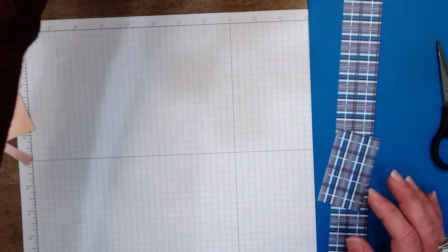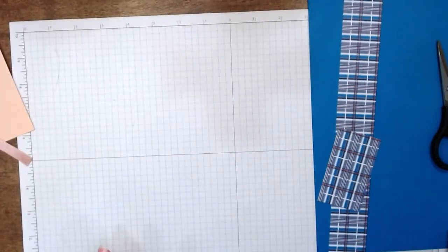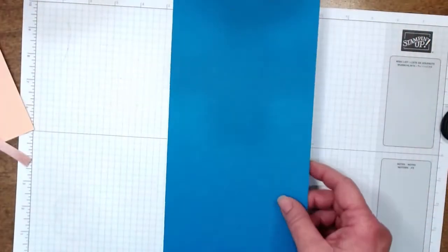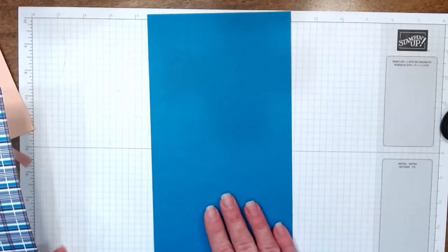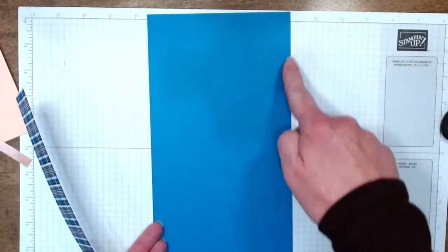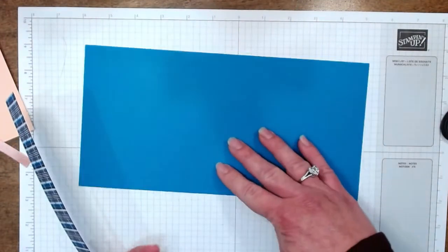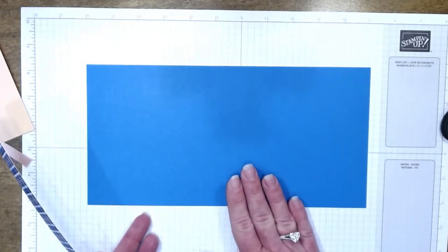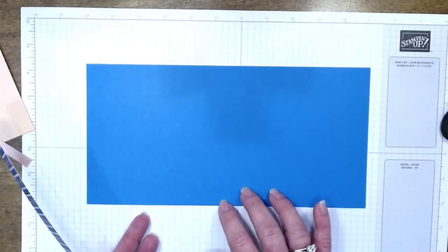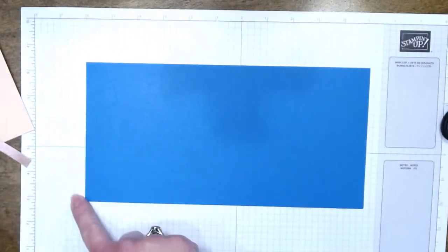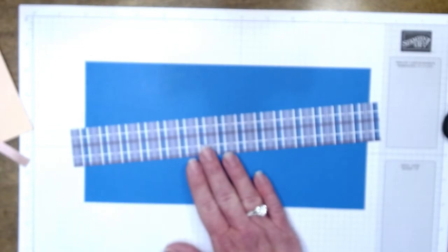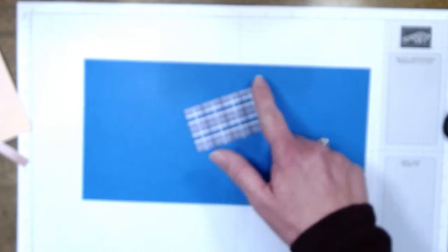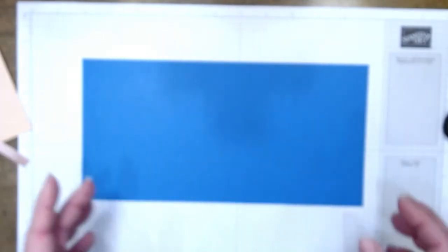So what you need to start out with is a piece of cardstock. It measures five and a half inches by 11. So you only get one hand sanitizer holder out of one sheet of paper. This is Pacific Point. And I have a piece of designer series paper. It's one and a half by 12, and then a little scrap that's three inches by one and three-fourths.